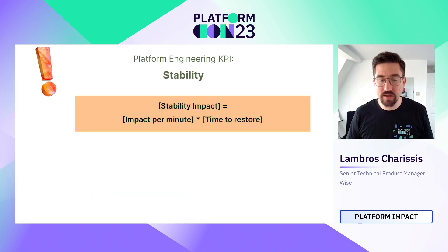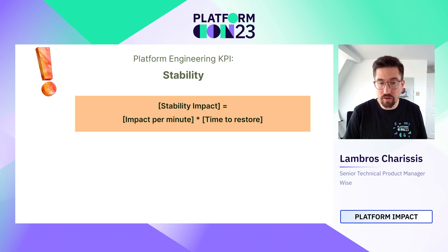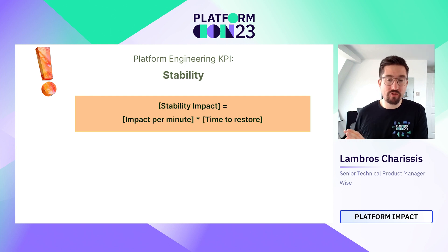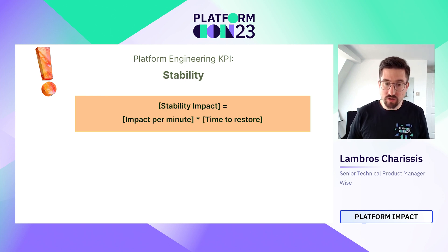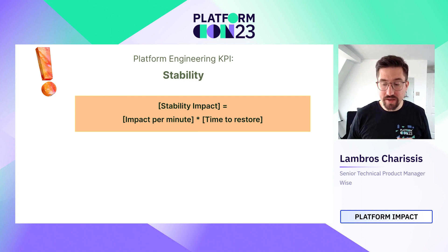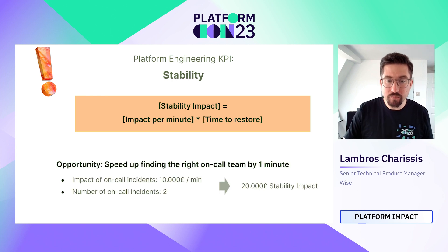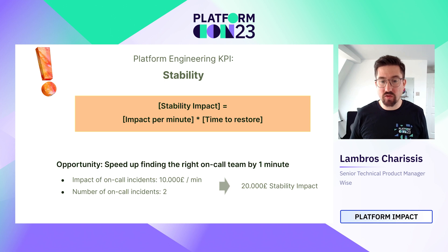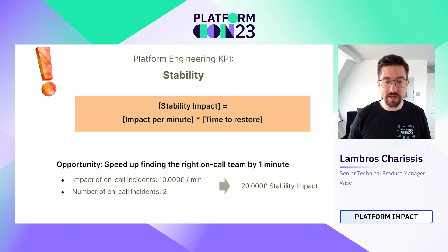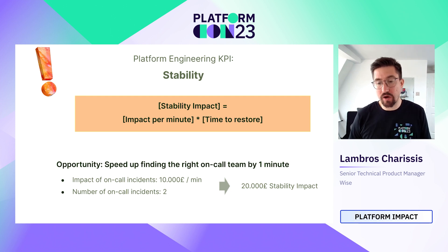For stability impact, it comes down to two things: the financial damage per minute an incident is open, and the time it takes to recover. It's not only immediate impact — if Wise is down, there's immediate revenue loss, but also longer-term loss like increased customer contact rates. Example: speeding up finding the right on-call team by one minute. The impact of on-call incidents is around £10,000 per minute on average, with around two incidents per quarter. Reducing time by one minute gives a £20,000 stability impact.